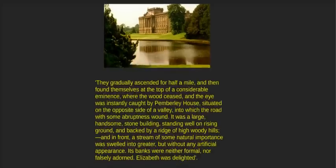In Chapter 43, Elizabeth visits Pemberley, the home of Mr Darcy, and the description is probably the strongest moment of symbolism in the entire novel. They gradually ascended for half a mile, and then found themselves at the top of a considerable eminence, where the wood ceased, and the eye was instantly caught by Pemberley House, situated on the opposite side of a valley, into which the road with some abruptness wound.